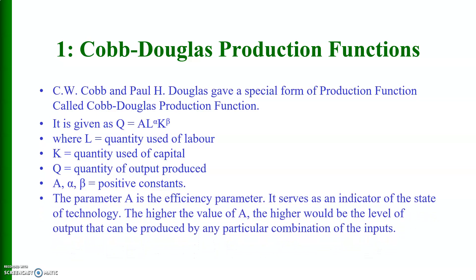The parameter A is known as the efficiency parameter in the Cobb-Douglas production function. It serves as an indicator of the state of technology. The higher the level of A, the higher would be the level of output that can be produced by any particular combination of inputs.